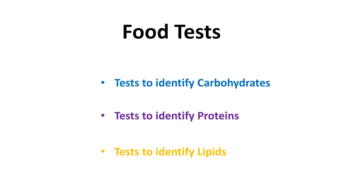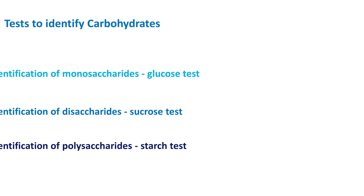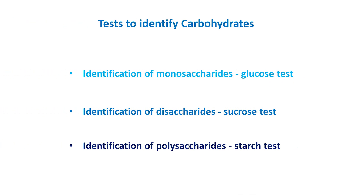We are going to do tests to identify carbohydrates, proteins, and lipids. As carbohydrates, we are going to identify monosaccharides, disaccharides, and polysaccharides. We are doing the glucose test to identify monosaccharides, the sucrose test to identify disaccharides, and the starch test to identify polysaccharides. These are the three main types of tests for carbohydrates.